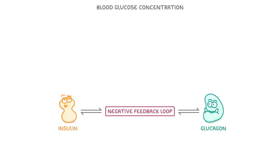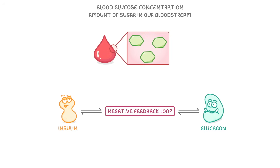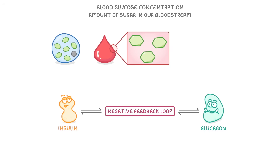Blood glucose concentration is just a fancy way of describing the amount of sugar in our bloodstream. We all need a decent amount of sugar in our blood, so that our cells have a constant supply of glucose that they can use for respiration.